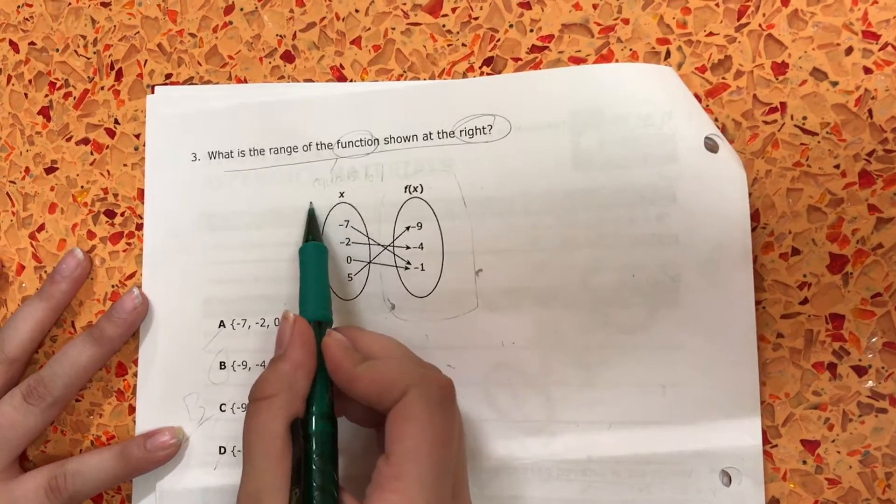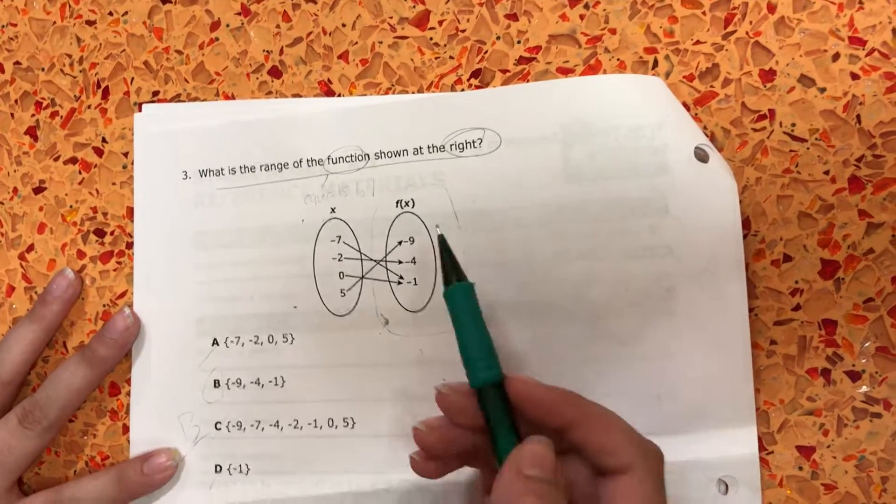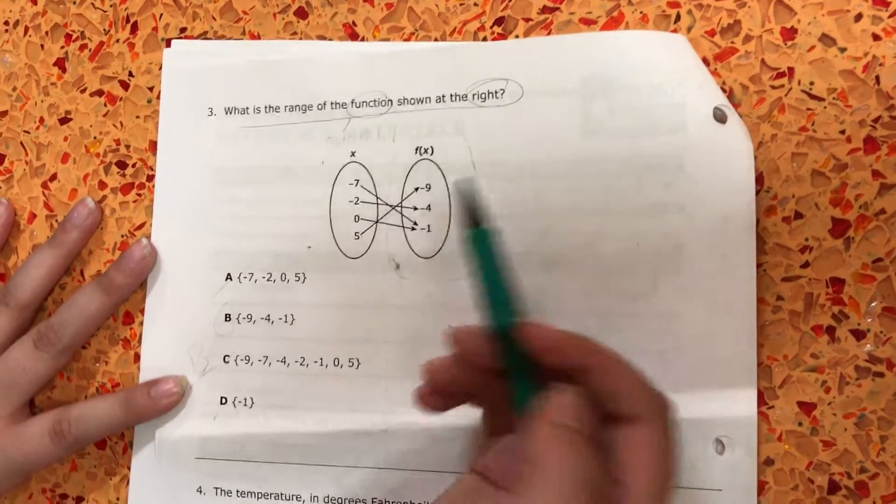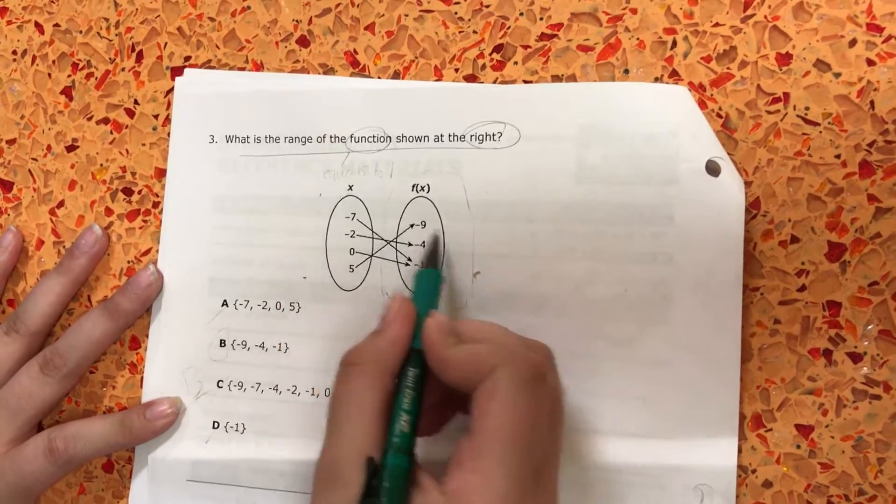So x could be your independent, and y could be your dependent, or this is the main, and this one is range. So you have to just get the axis.